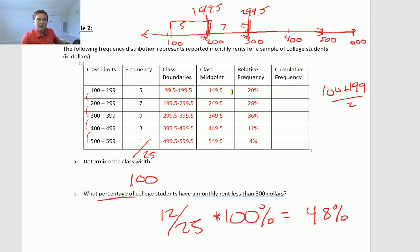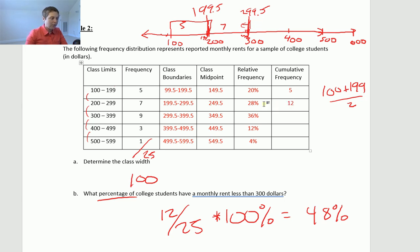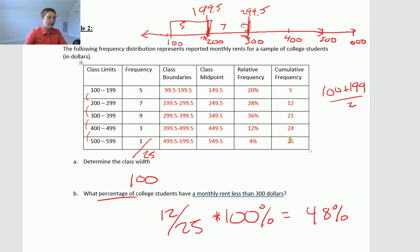Cumulative frequency: you accumulate upward as you go down. Start at the lowest class with 5. Then add on 7: 5 plus 7 is 12. Then add on 9: 12 plus 9 is 21. Then add on 3: 24. Then add on 1: 25. Your final cumulative frequency at the bottom should match your total sample size.